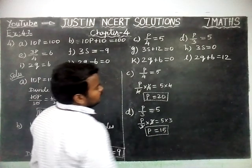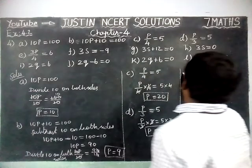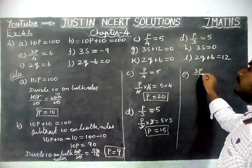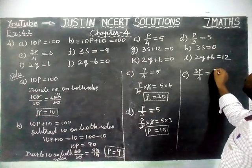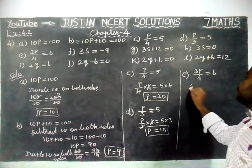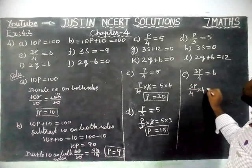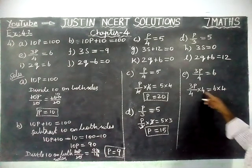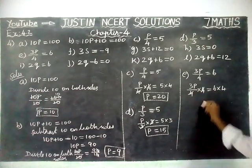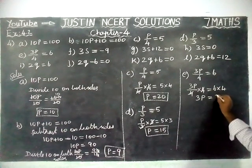Part E: 3P divided by 4 is equal to 6. Denominator is 4, so first we have to multiply by 4. 3P divided by 4 into 4 is equal to 6 into 4. We multiplied 4 on both sides. 4, 4 gets cancelled. 3P is equal to 6 fours are 24.